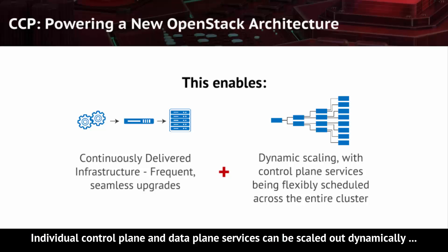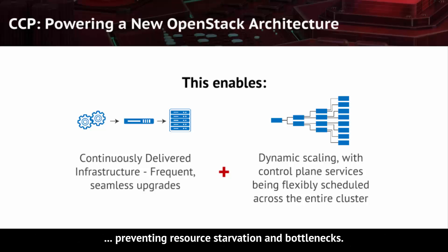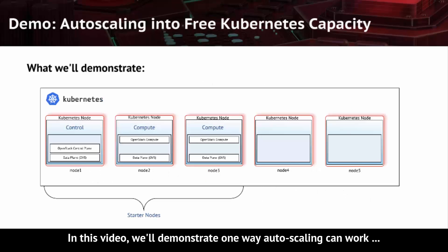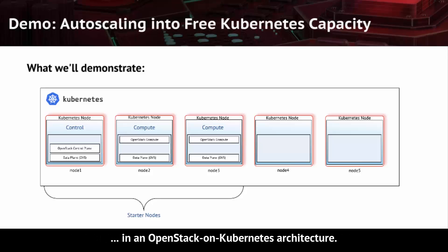The CCP OpenStack cloud can also grow larger and perform better. Individual control plane and data plane services can be scaled out dynamically, preventing resource starvation and bottlenecks. In this video, we'll demonstrate one way autoscaling can work in an OpenStack on Kubernetes architecture.